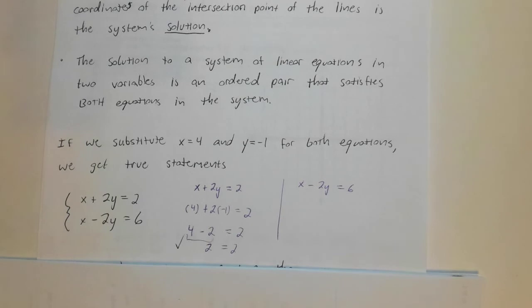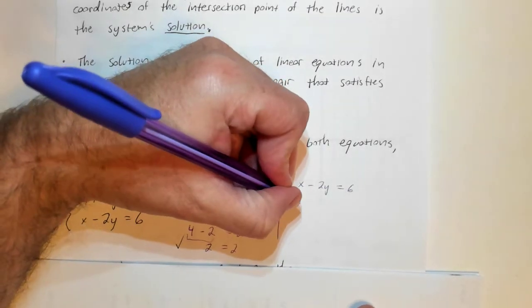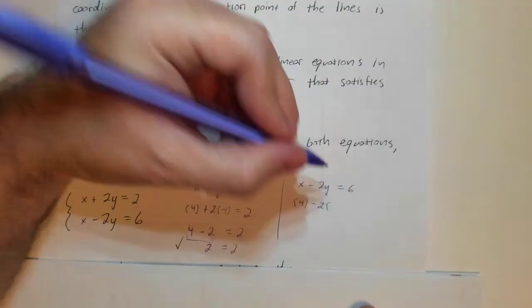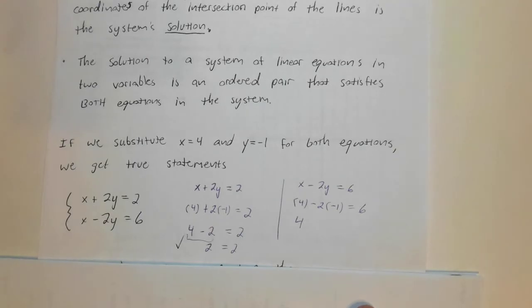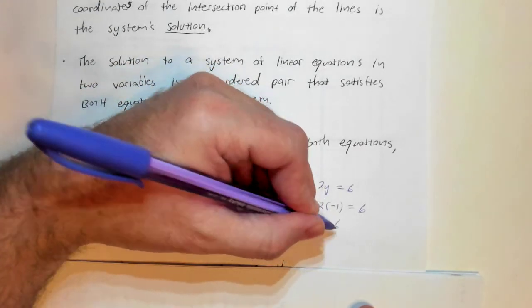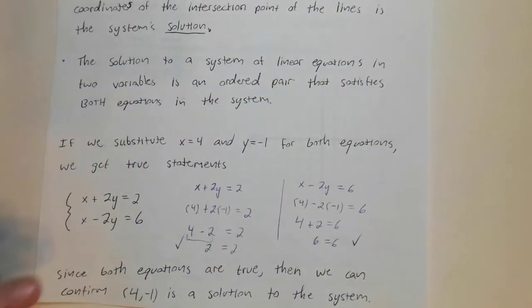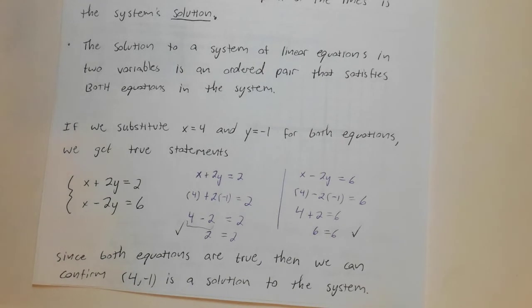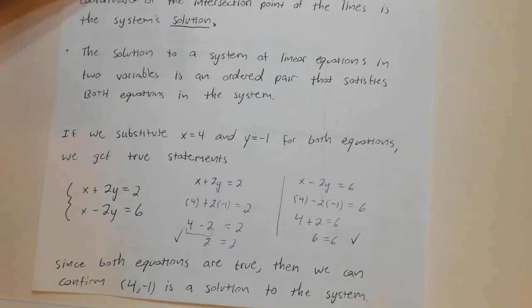We've got to get true statements in order for it to work. So let's try this one. x was 4 minus 2 times a minus 1. So 4, minus 2 times minus 1 is a positive 2. 4 plus 2 is, in fact, 6. So we get true statements for both equations.